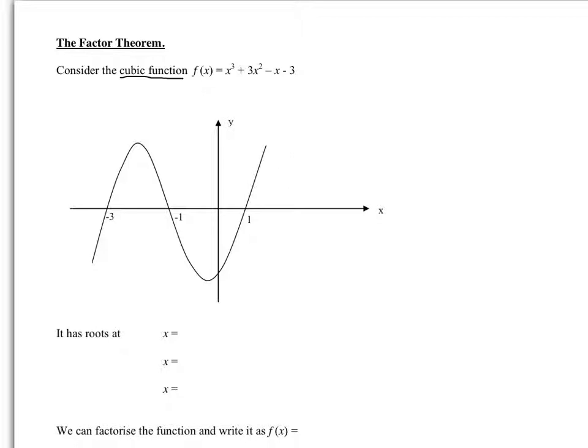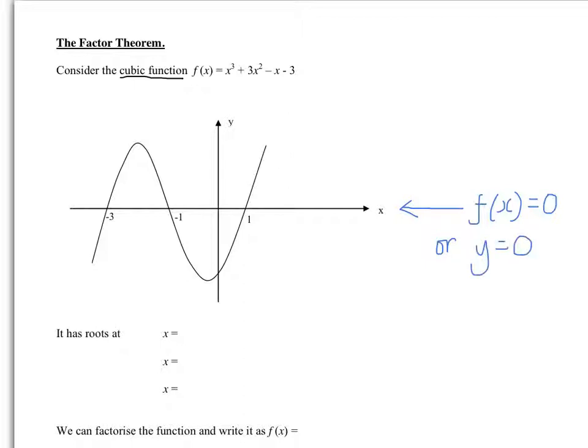Highlighting the roots that we've got, we have x equals minus 3, x equals minus 1, and x equals 1. So this is a graphical representation of the function x cubed plus 3x squared minus x minus 3. When we say 'roots', that's where we mean where it crosses the x-axis. From our previous work, we know along the x-axis that either f of x equals 0, or y equals 0 — f of x being the function notation, and y is the Cartesian form.